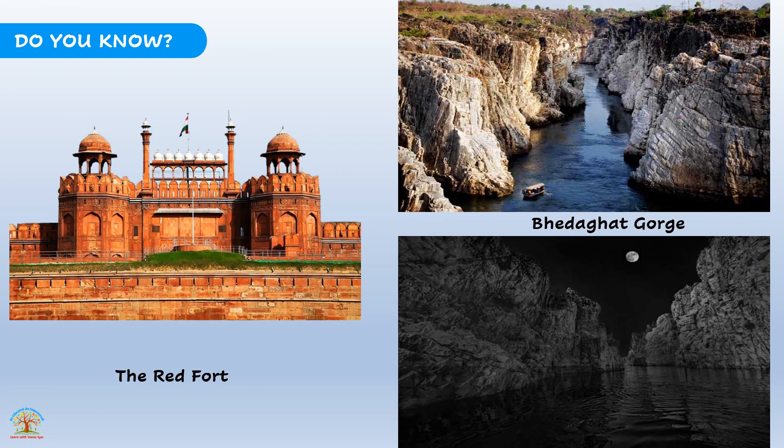Do you know, children, that the Red Fort is made by sedimentary rock? Near Jaipur city in Rajasthan, red stone is found. The Red Fort of Delhi is made by sedimentary rocks - this rock was used for its construction. As sandstone is relatively soft, it was very easy to carve. Normally the sculptures and idols which you see made of stone are made from sedimentary rocks - most sculptures are made by sedimentary rocks.